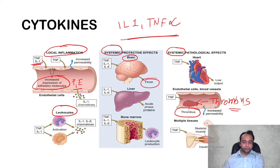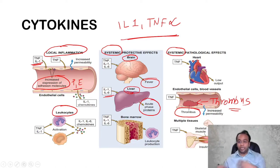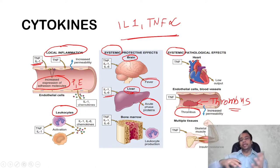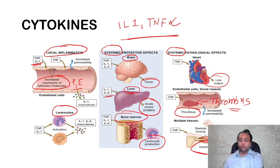In the brain, IL-1 and TNF-α lead to fever through release of pyrogens. IL-6 stimulates the liver to produce acute phase reactants such as C-reactive protein (CRP) and serum amyloid-associated protein (SAA), which are increased during inflammation and can be measured to assess its severity. IL-1 and TNF-α also stimulate leukocyte production from bone marrow and can affect cardiac output.